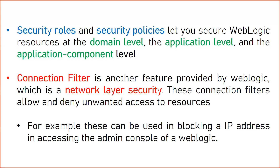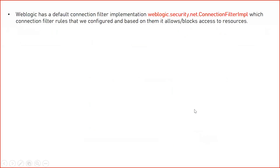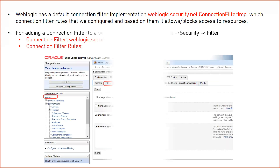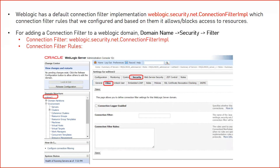For example, these can be used to block an IP address from accessing the admin console of WebLogic server. When we configure a connection filter in WebLogic server, we have to use a specific security class: weblogic.security.net.ConnectionFilterImpl. This is the built-in class provided with the WebLogic server installation. When you go for the configuration of connection filters, you just need to copy-paste and specify this particular class in a field that you will see in the configurations. This is the location where you specify the connection filter class and the connection filter rules when you go to the WebLogic console.